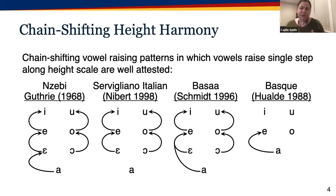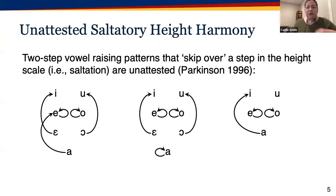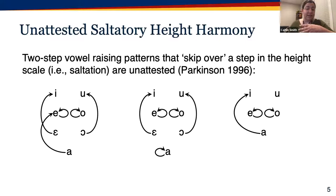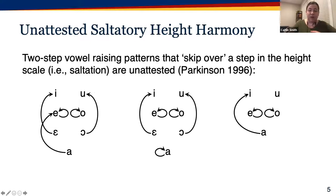We need some way of generating chain shifts, and chain-shifting height harmony is well-attested. Another logically possible partial height harmony is one in which vowels raise either two steps or not at all, potentially giving rise to a saltation. In saltatory raising, a vowel raises and skips over one of the heights in the scale, and the vowels at the skipped height don't raise. These types of height harmonies appear to be unattested.